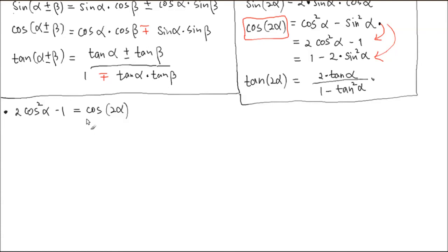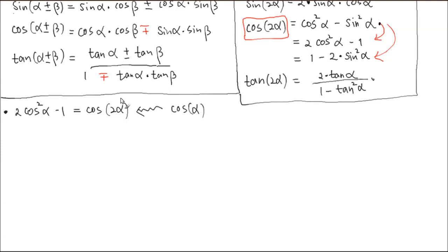What is the transformation that takes cosine α to cosine 2α? Is it a horizontal or vertical transformation? Alpha is the main variable, so it's horizontal. Two is multiplied to alpha, so it's going to be a stretching or shrinking. If the factor multiplied is 2, that's shrinking. This reflects the frequency — a higher number means higher frequency, more up and down. So this is simply horizontal shrinking.